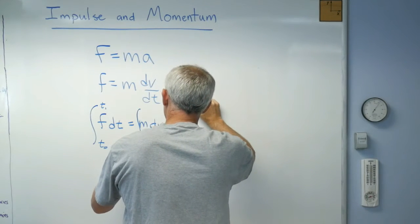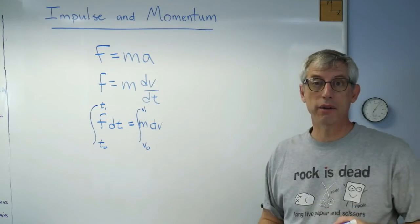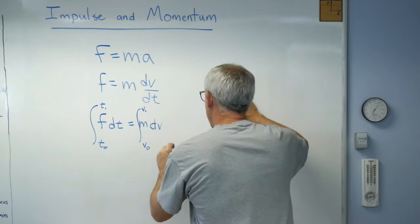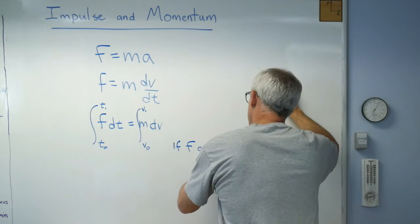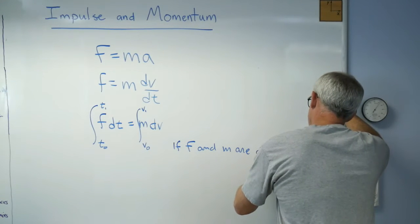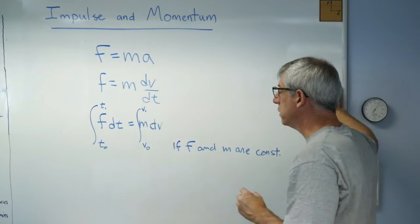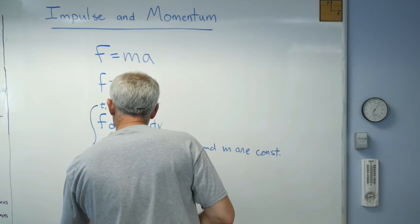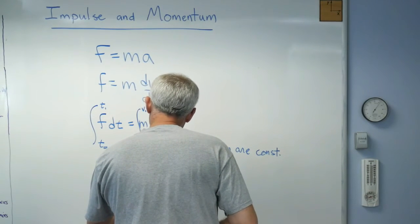That's the one property those variables have that makes them a little different than any other variable. So let's say if F and M are constant. That is, they don't change, they're just numbers, they're not functions. Well, this becomes F dT, and this is M dV.